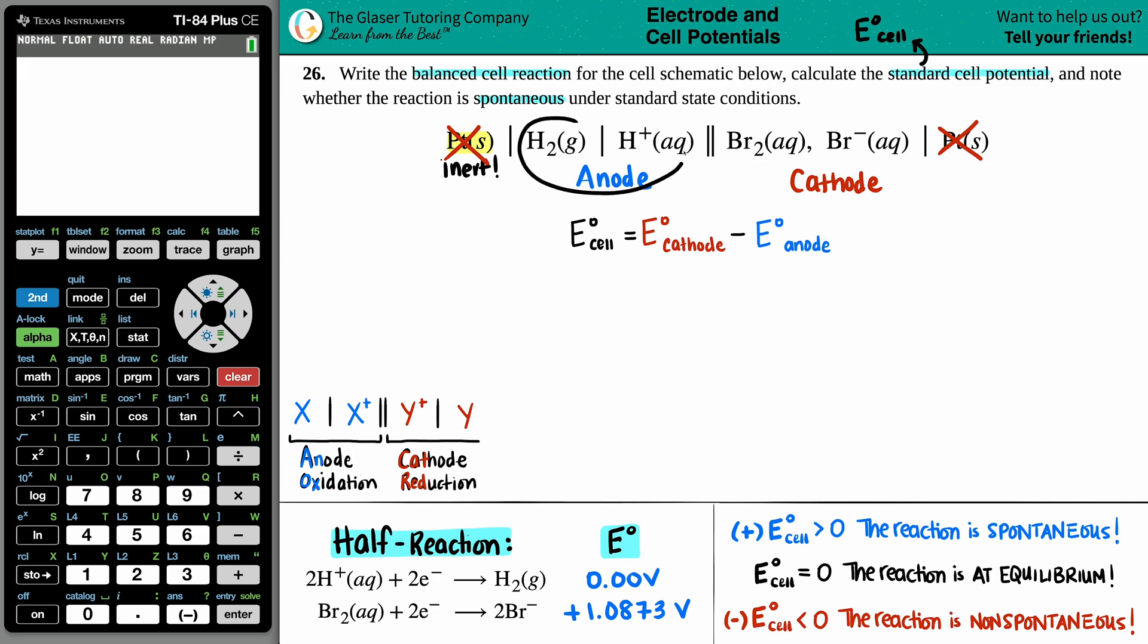I know that the hydrogen is going to be the anode. So I'll just say the H2. And the bromines are the cathode. I'm going to put Br2. Now, when I do my standard cell potential, I only take these values.